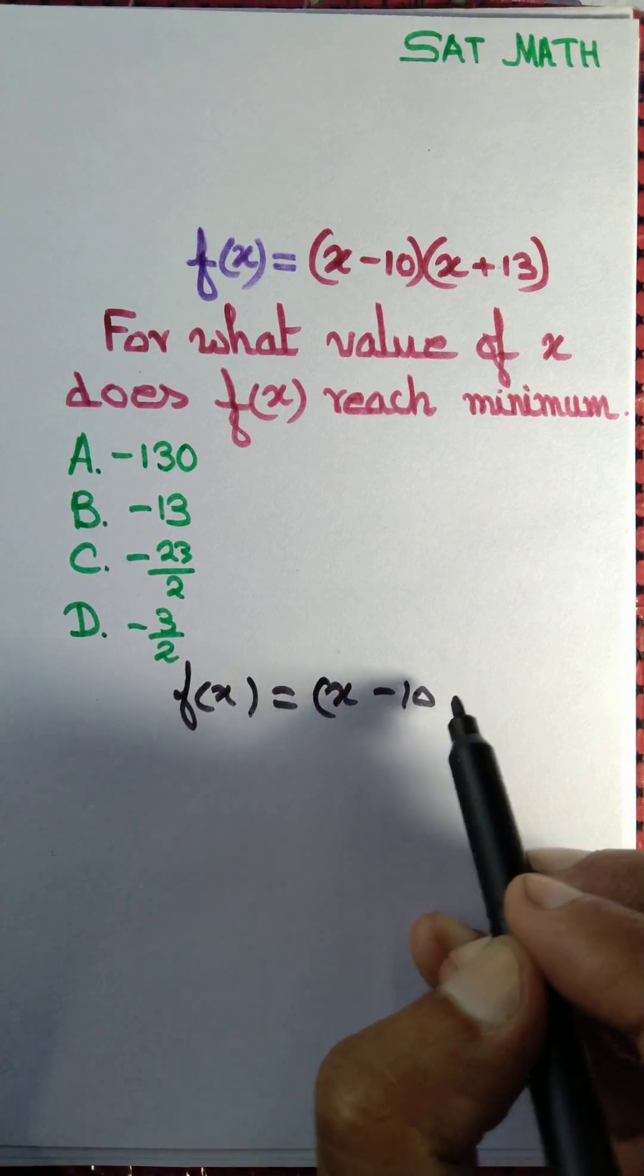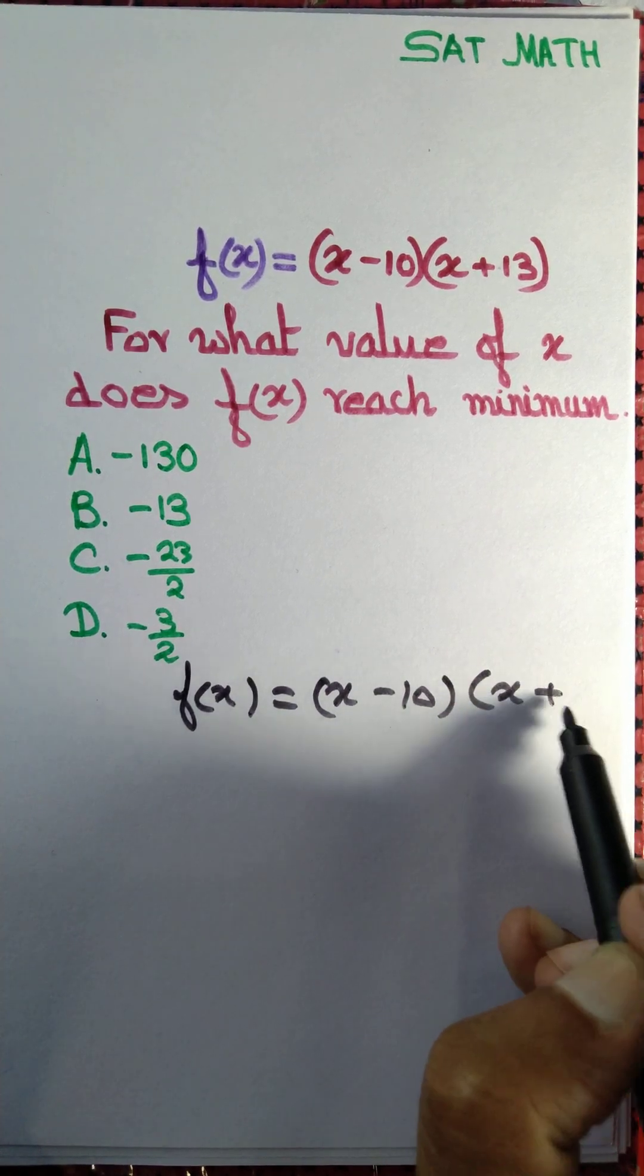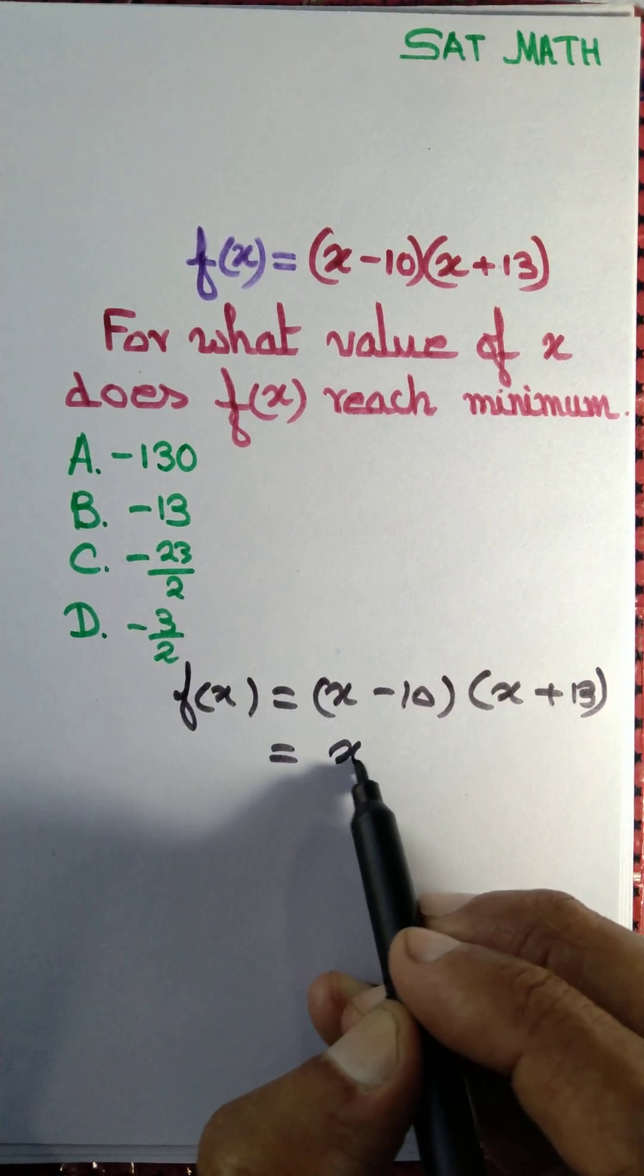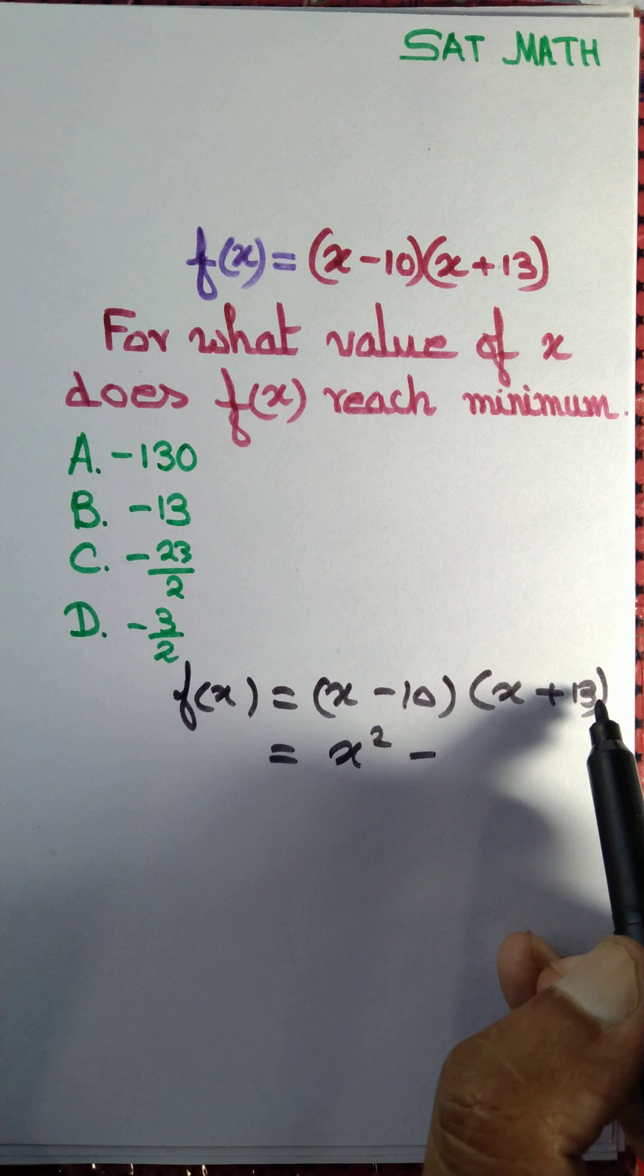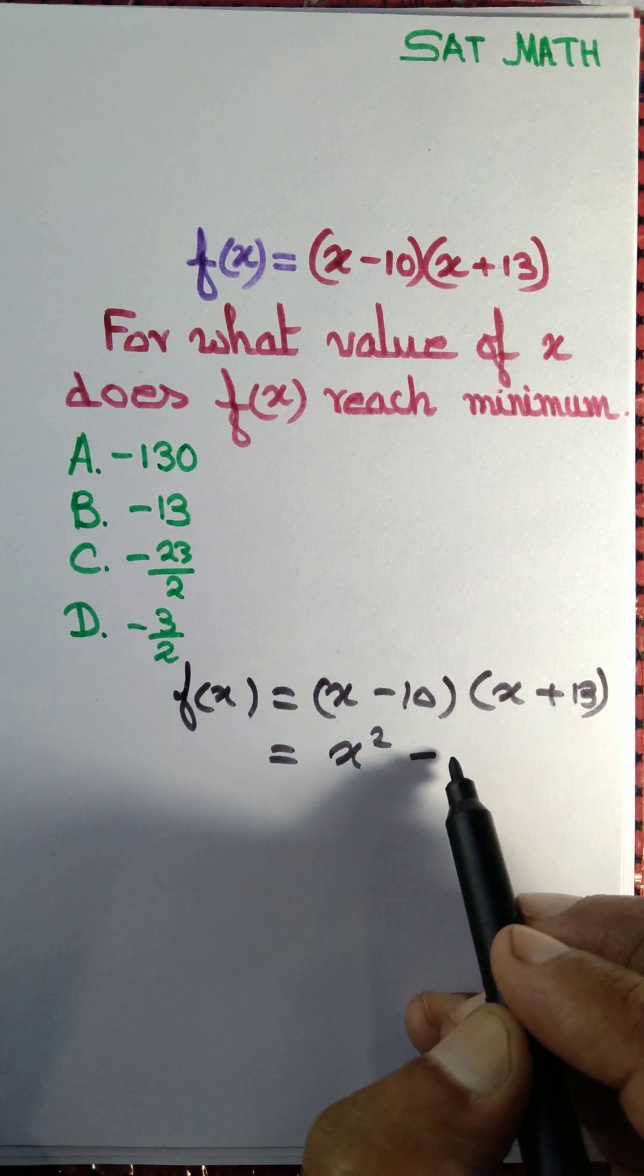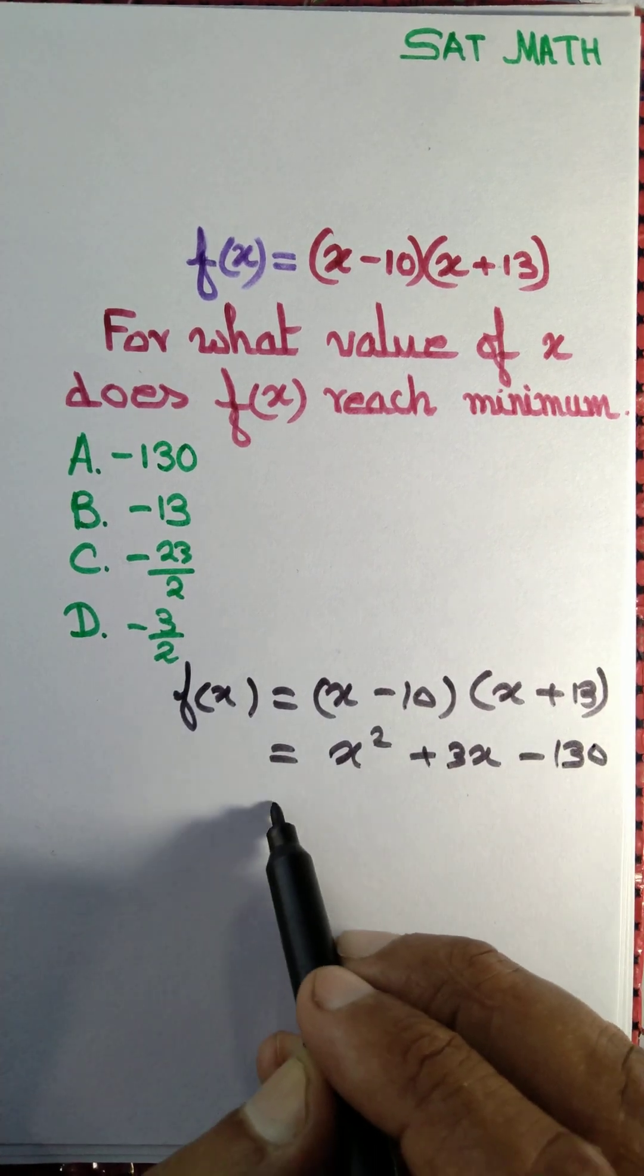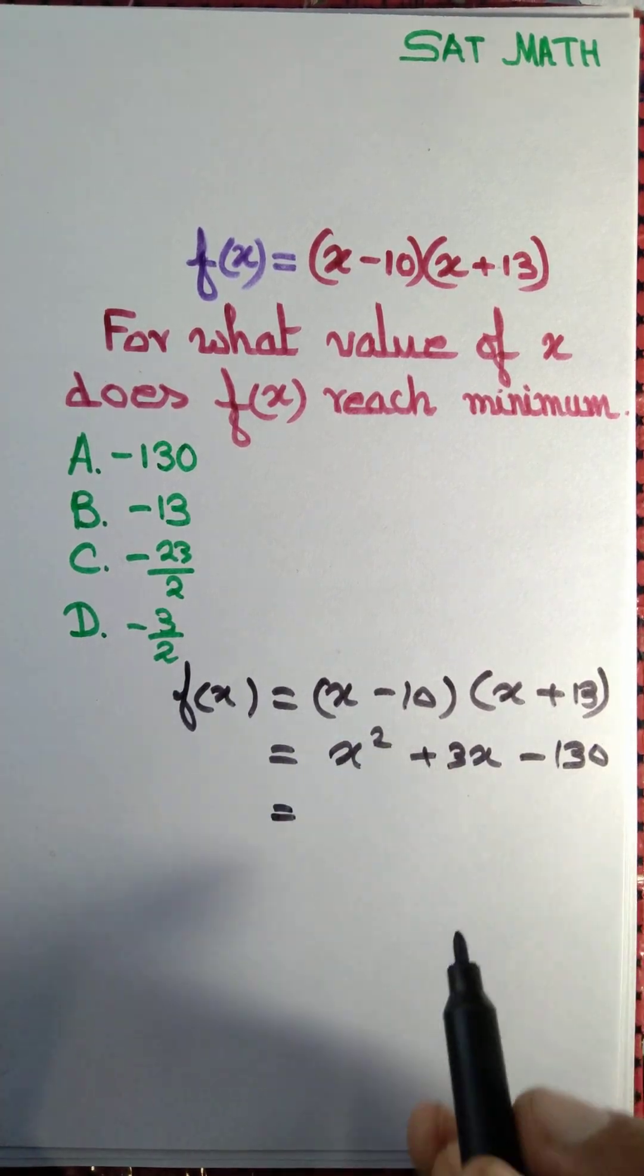We can multiply it out by applying the distributive law to get x² - 10x + 13x, that's +3x, minus 130. Now we can render this expression to be a perfect square by writing this as x² + 2 times x times 3/2.